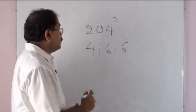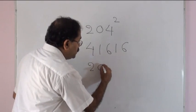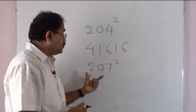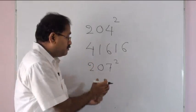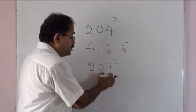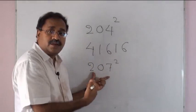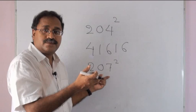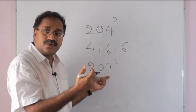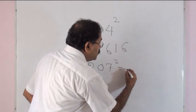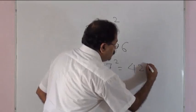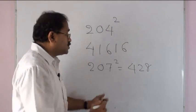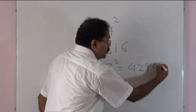For 207 squared: 207 is 7 more than 200, so 207 plus 7 is 214, then double 214, which gives 428, followed by 7 squared, which is 49. So 207 squared equals 42849.